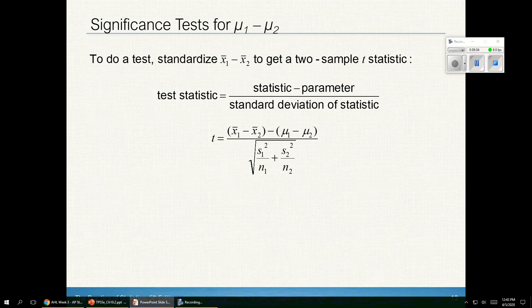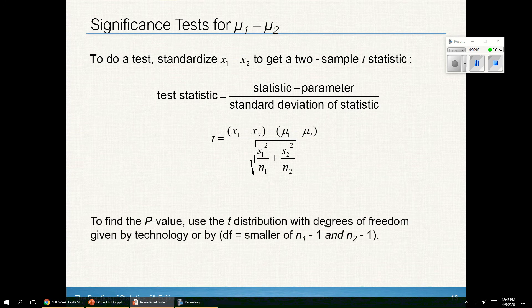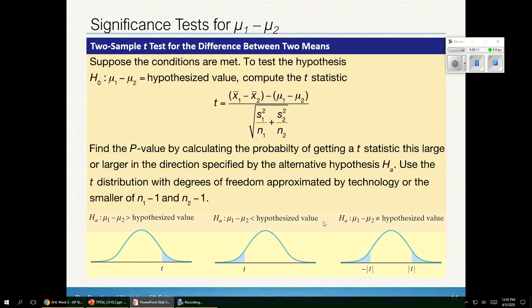The alternative hypothesis could be the one-sided, greater than or less than case, or the two-sided, not equal to case. To do a test, standardize x-bar 1 minus x-bar 2, get my test statistic, use the degrees of freedom, and find the p-value. The p-value represents the corresponding shaded blue region, and if that's really small, the p is low, I'm going to reject H₀.